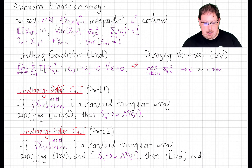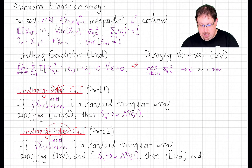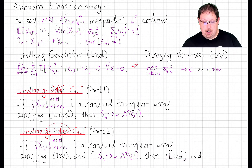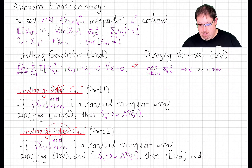It's natural to wonder whether the Lindbergh condition is the best possible, and the answer is pretty close — because of the second half of the Lindbergh-Feller CLT, this part due to Feller. If the sum of the nth row converges to a normal and the array satisfies the decaying variance condition, then it actually satisfies the Lindbergh condition. So while that doesn't show the Lindbergh condition is the best possible, it does mean the decaying variance condition alone can't do the trick, because if it could, the Lindbergh condition would have to hold as well.